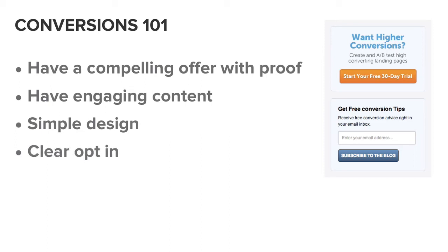Obviously a clear opt-in is important. If you've got a very clear goal of what you want that person to do — like on the right hand side there, you can see an example, I think this is from Unbounce — it's got a clear heading: 'Do you want higher conversions? Of course I do.' Here's a free trial to use their conversion software. Very clear, couple of words, very simple, the color stands out. They've also got an opt-in for their content as well, but if you've only got one opt-in, that's even better.